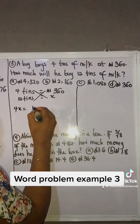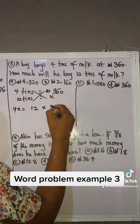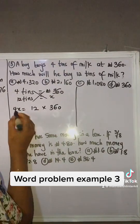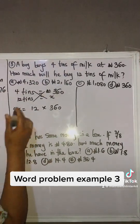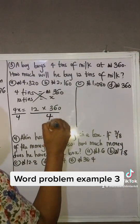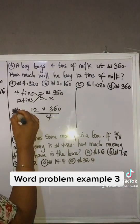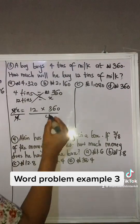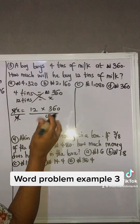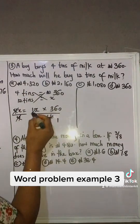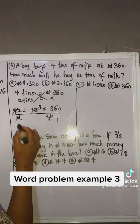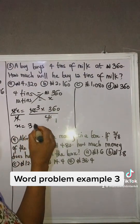4x equals 12 times 360. So what's the coefficient of x? It is 4, so we divide both sides by 4 so that this 4 cancels out and x is left. We reduce this: 4 goes into 4 one time, 4 into 12 is 3, so x is 3 times 360.